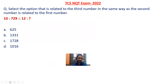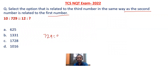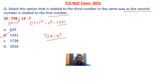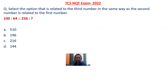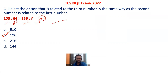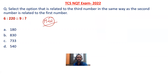Select the option related to the third number in the same way as the second number is related to the first. Seeing 729, it is 9 cubed — so this is 10 and this is (10−1) cubed. Here we have 12, so (12−1) cubed = 11 cubed = 1331. Option B is the correct answer. Another: 8 squared and 10 squared — 8 plus 2 — so 16 squared gives 14 squared = 196. Option B is the correct answer.